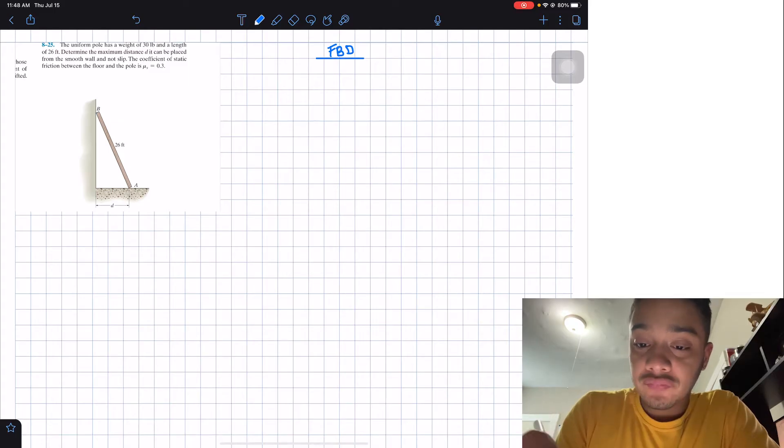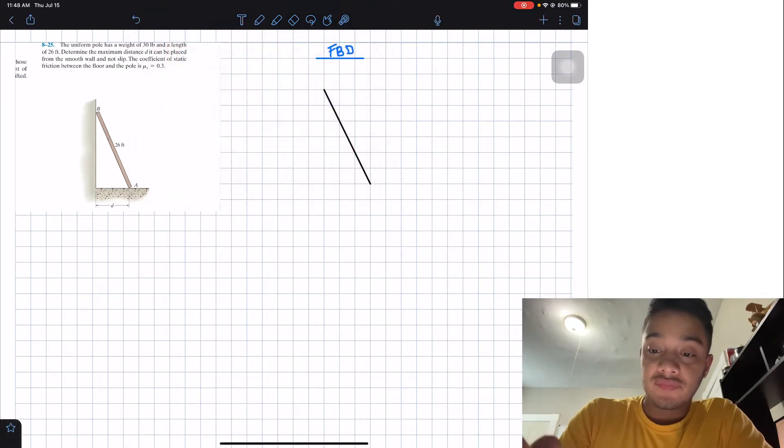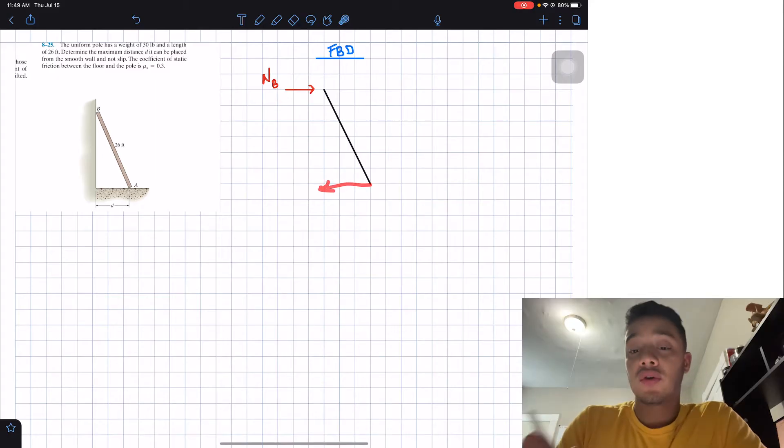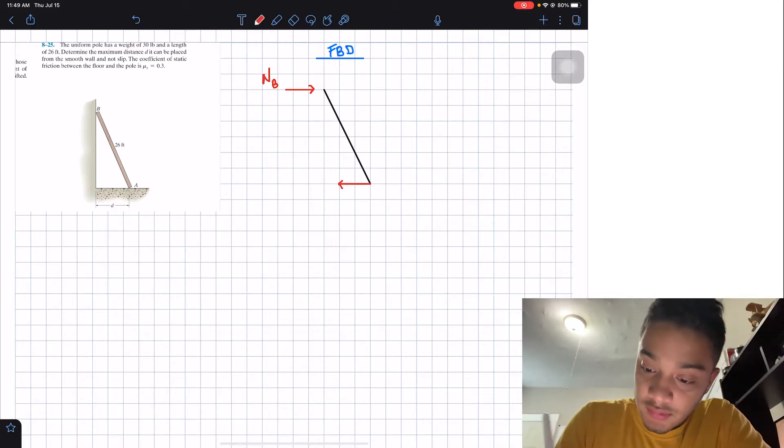So here we are. Our pole is kind of like diagonally placed like this. Now in here, my pole is touching this wall. So we'll have a normal in this direction, normal at point B. Then what else do I have? Well, as I said before, my pole will want to move in this direction. Therefore, my friction will want to go in that direction, always opposite to the direction of motion. So this is our friction force.